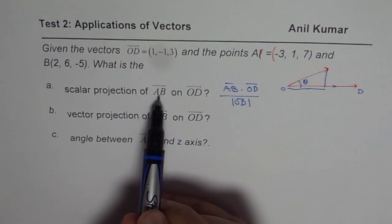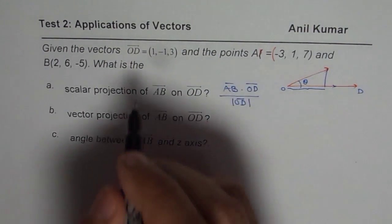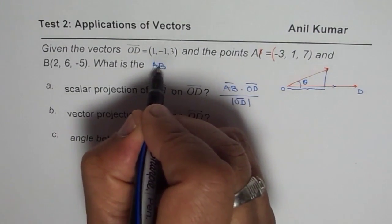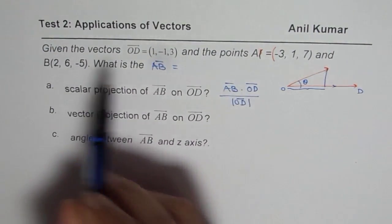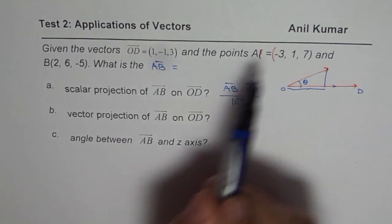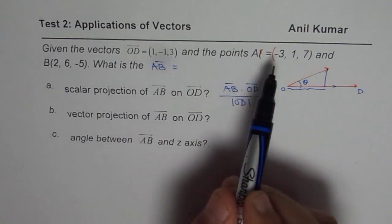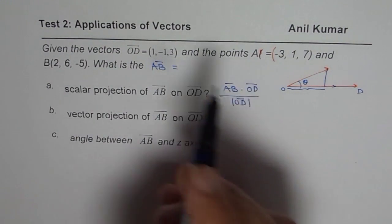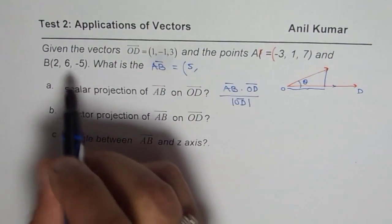But before that you need to find what AB is. So AB will be equal to—the position vectors are given to you. For AB, 2 minus (-3), so you will get 5 here.